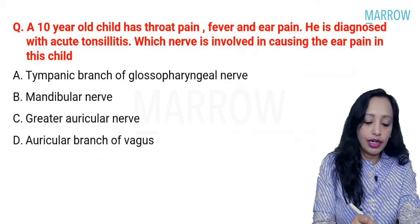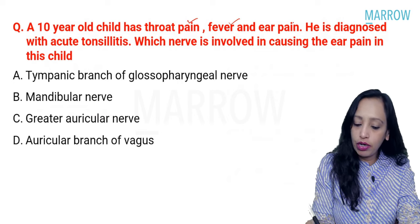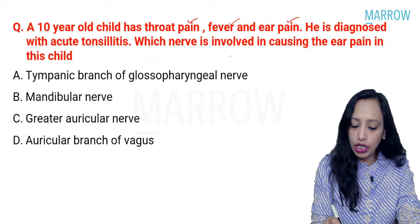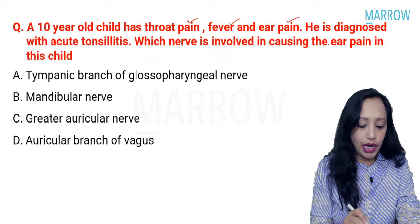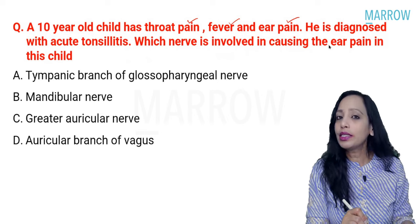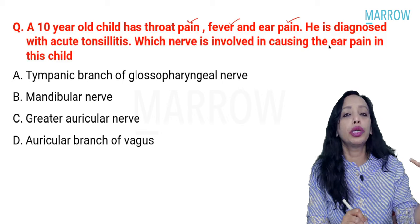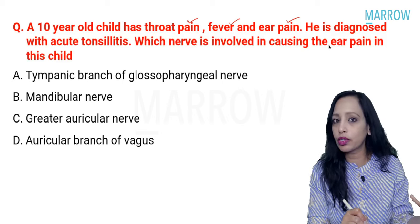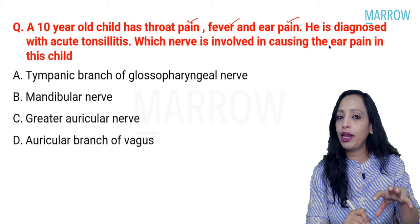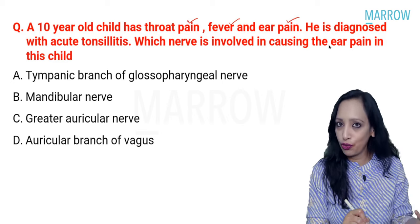Starting with the first question: a 10-year-old child has throat pain, fever, and ear pain. He is diagnosed with acute tonsillitis. Which nerve is involved in causing the ear pain in this child? What is being asked is what nerve carries referred pain from the tonsil to the ear. The tonsil is supplied by the glossopharyngeal nerve, so referred pain to the ear will be through the tympanic branch of glossopharyngeal.